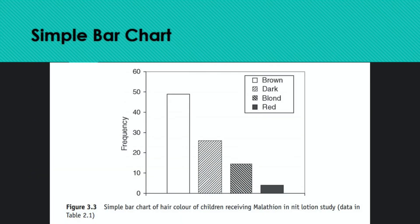Here is a simple bar chart with a caption, defined axes, and simple bars presented. The title reads: 'Simple bar chart of hair color of children receiving malathion in a nit study, data table 2.1.' Hair colors are plotted. All bars are presented in different shades or colors to differentiate them, with labels indicating which bar represents brown, dark, etc. This chart is very commonly used in research — easy to understand. Frequency is visible on the axis.